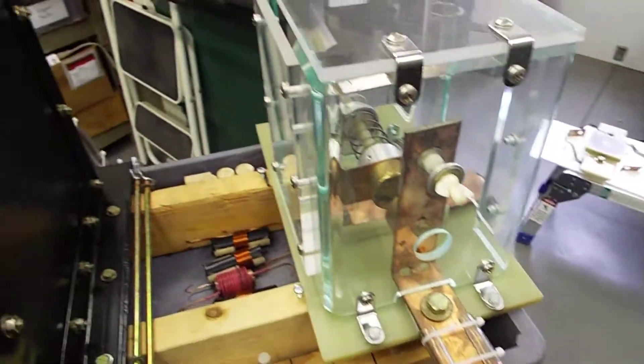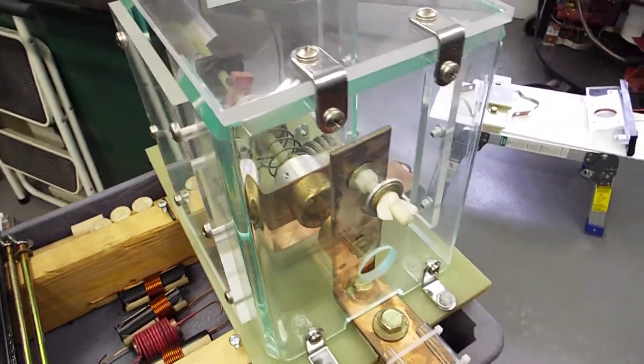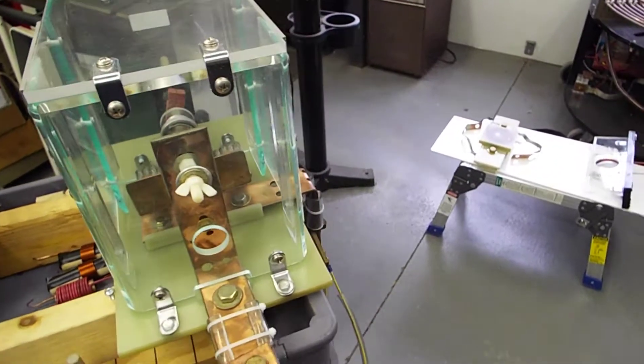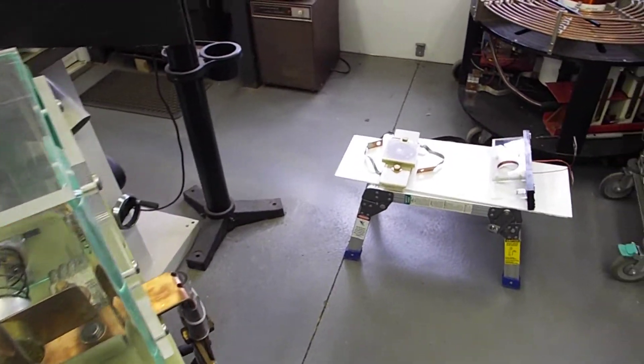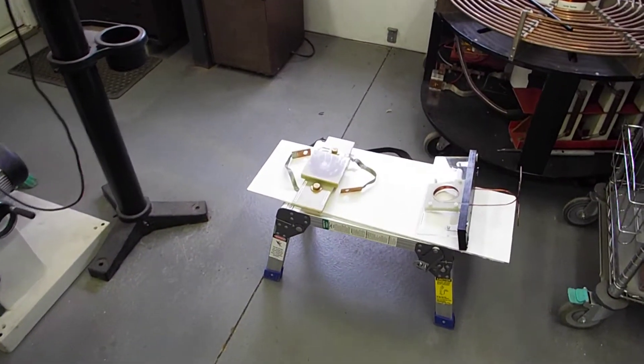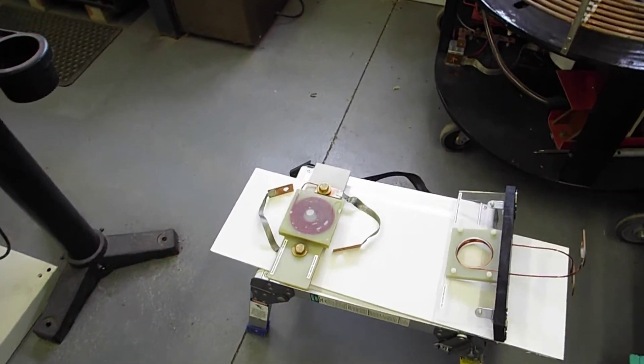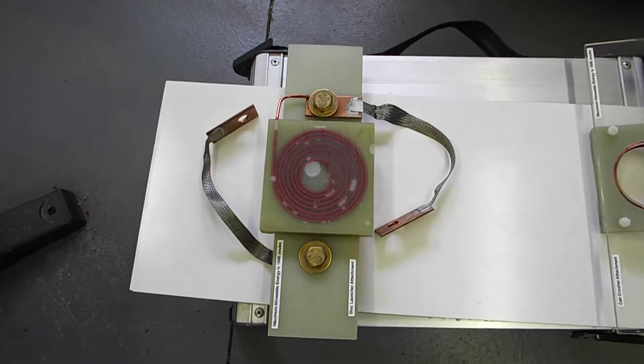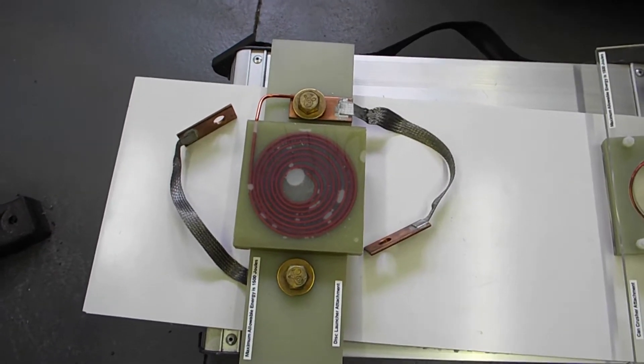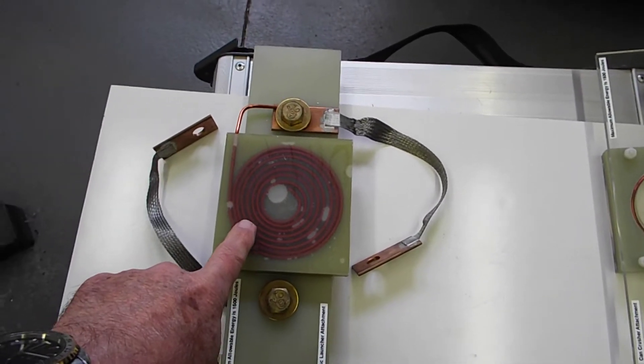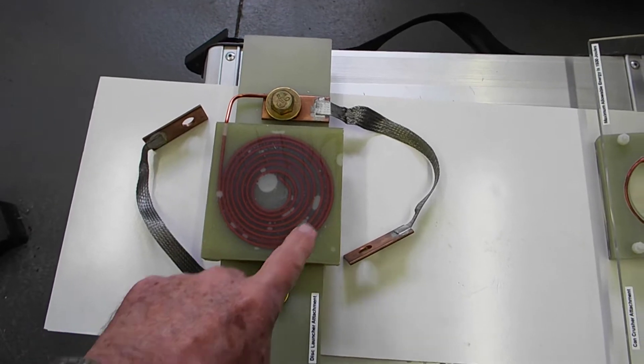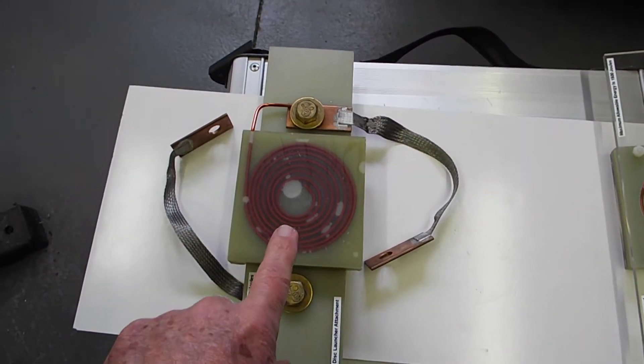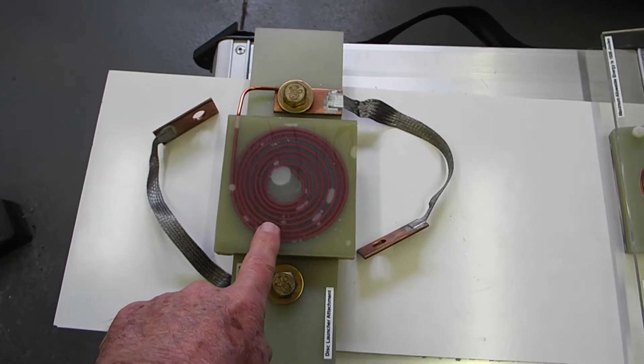Now, I mentioned that it can be used for disc launching and can crushing also. So here are the attachments I used for that. Here's the disc launching attachment. And this is a spiral coil. And the hard disc drive platter, you just lay it right on there. And it's exactly the same size, 5 1/4 inches.